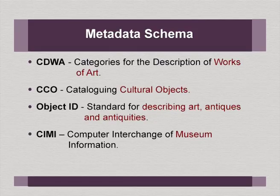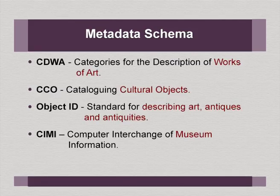There are many, many metadata schemas. In fact, one of my students, when I asked her to collect the list of metadata schemas, even about three or four years back, she came across about 200 schemas. Many of them probably are highly specific, used by very small communities. That is the reason Dublin Core is considered the lowest common denominator across many schemas. There is something like CWA categories for description of works of art, and CCO — Cataloging Cultural Objects. Then Object ID, standards for describing art and antiquities.